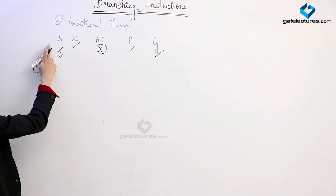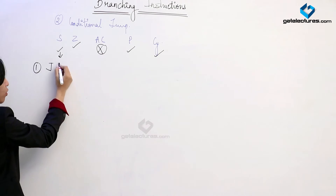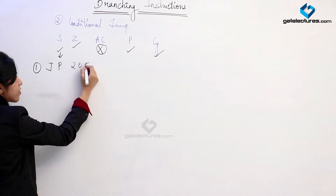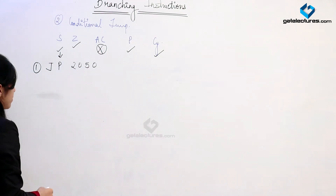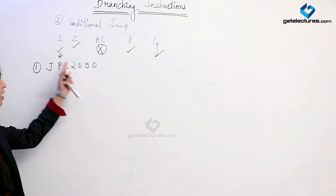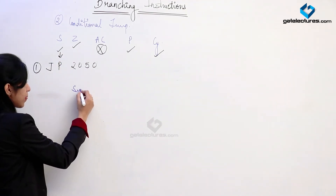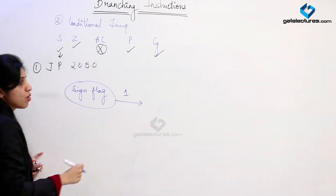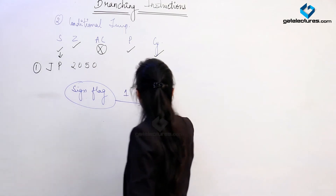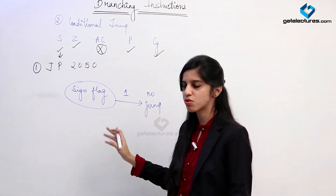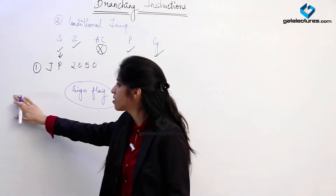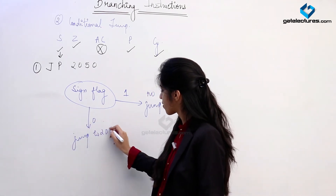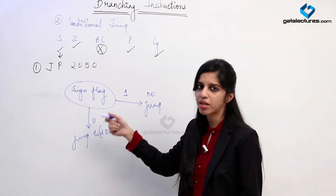For the sign flag, we have two instructions: JP (jump on plus) and JM (jump on minus). For JP, suppose we give the instruction JP 2050. We check the sign flag. If the sign flag is 1 (meaning the result is a negative number), we are not going to jump — simply the next instruction is executed. But if the sign flag is 0 (result is positive), then we jump to address 2050. Similarly for JM: if the sign flag is 0, no jump; if the sign flag is 1 (minus sign present), we jump to the given memory location.